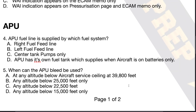Let's move on to the next question. When can the APU bleed be used? This is taken directly from the FCOM limitations section under the APU chapter. The options are: A, at any altitude below the aircraft service ceiling at 39,800 feet; B, any altitude below 25,000 feet only; C, any altitude below 22,500 feet; and D, any altitude below 15,000 feet only. Pause the video and let's see if you can solve this question.